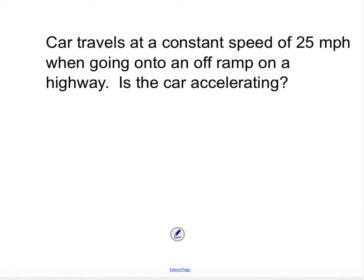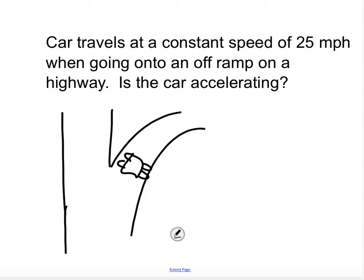On the other hand, what if we tried this now? What if the car travels at a constant speed of 25 miles an hour, and it's going on an off-ramp? So top-down view of a car. That's supposed to be a car. And it's going around the curve at 25 miles an hour.